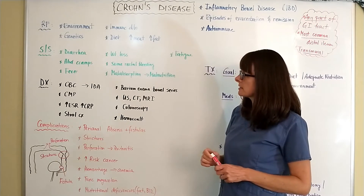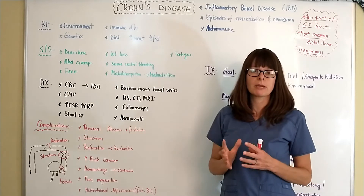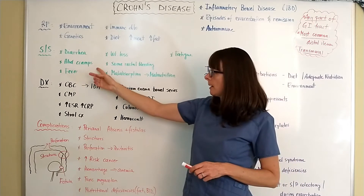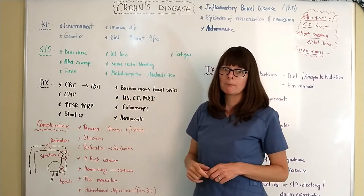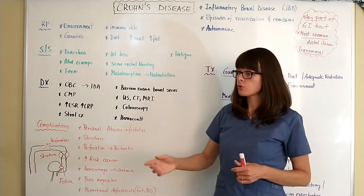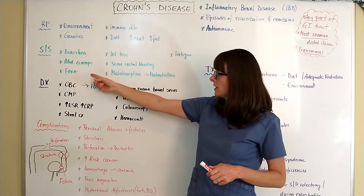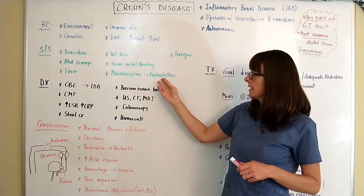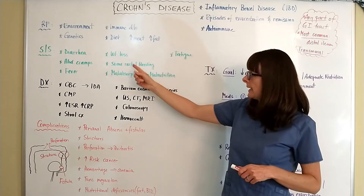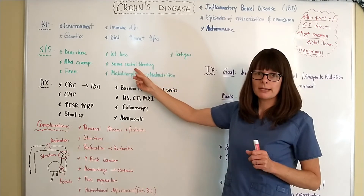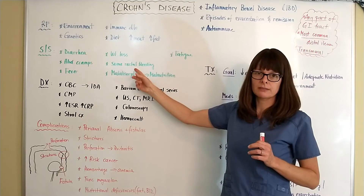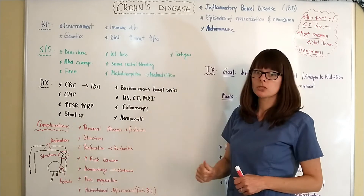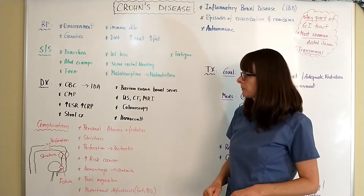Signs and symptoms include inflammation of the GI tract. Patients will often have diarrhea, abdominal pain, and cramps. Because of this widespread inflammation, they may develop fever. Due to malabsorption, there can be malnutrition and weight loss. There may also be rectal bleeding, though it is typically not as significant as in ulcerative colitis, and patients will be fatigued from the widespread inflammation.